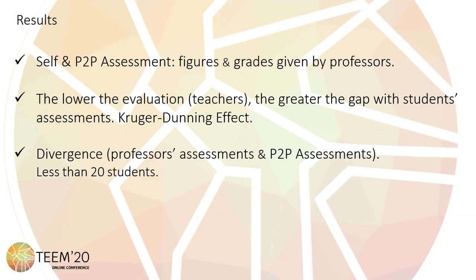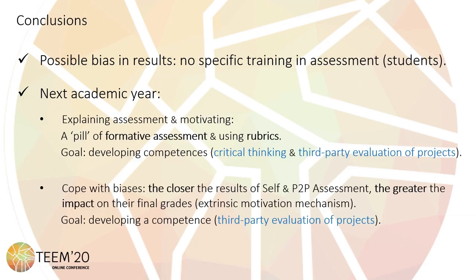Once the data was analyzed, some results can be highlighted. First, self-assessment and peer-to-peer assessment result in higher qualifications when compared with the grades given by the teacher. Second, the lower the evaluation given by the teacher, the greater the gap between that evaluation and the value given by the student. This fact could be explained by the Kruger-Dunning effect.